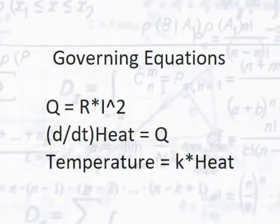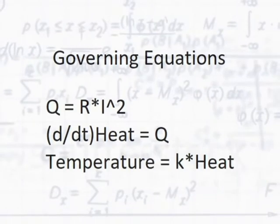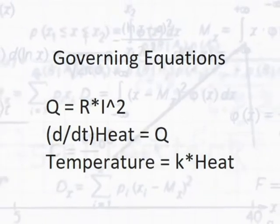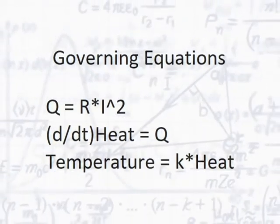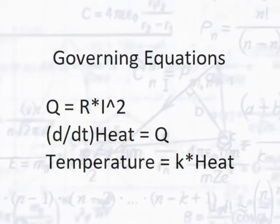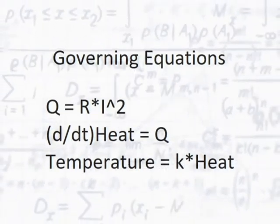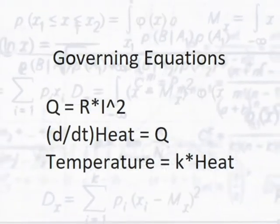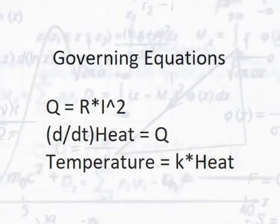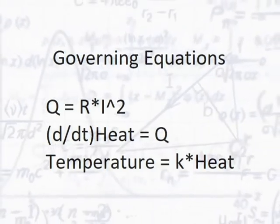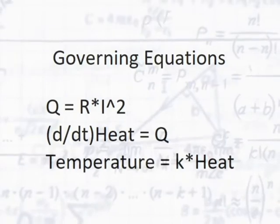The governing equations for the system are that the rate at which heat flows into the system is equal to the square of the current flowing through the heating element times the resistance of the heating element. This heat flow rate is then the derivative of heat, and the temperature is proportional to the heat by a constant.